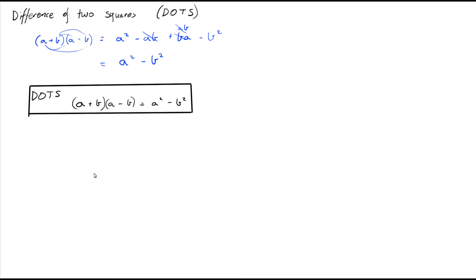Let's have a look at Example 6. We've got (2x - 4)(2x + 4).